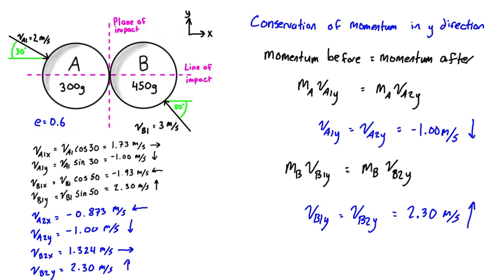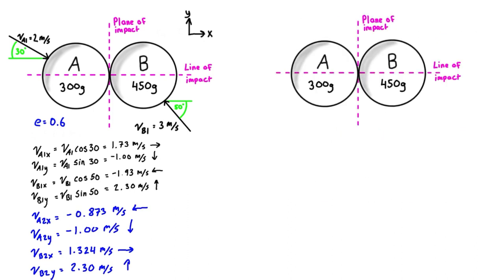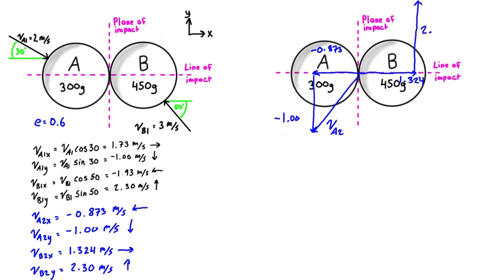We now have the x and y components of each final velocity. Let's sketch the overall velocity vectors. For A, the x-component is negative 0.873 m/s and the y-component is negative 1.00 m/s, so the resultant va2 points down and to the left. For B, the x-component is 1.324 m/s and the y-component is 2.30 m/s, so the resultant vb2 points up and to the right.